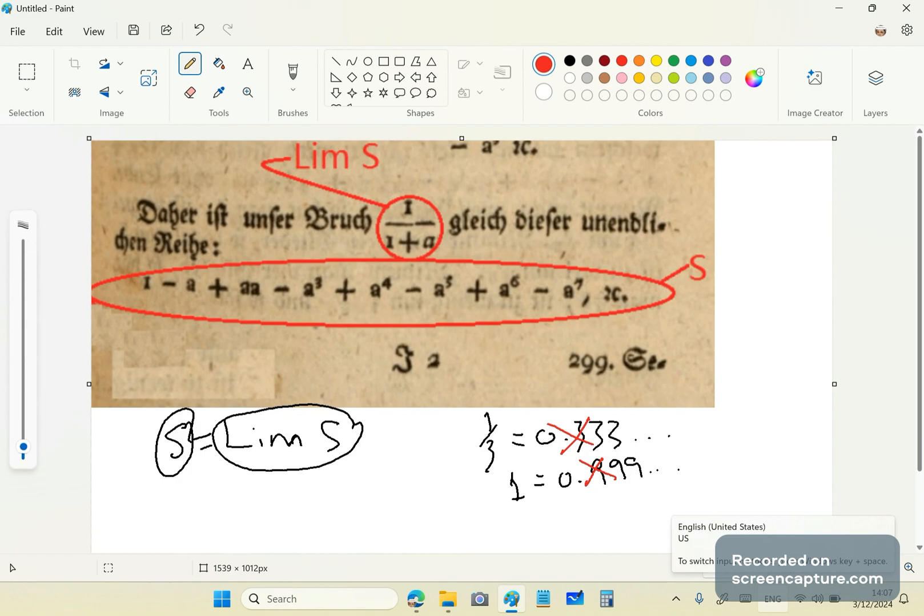So this theorem that I've just showed you proves that you cannot represent a third in base 10. So it would make no sense to say s is equal to lim s in this case, because it's not true. So a third does not have a measure in base 10, because 3 is not a prime factor. It's not one of the two prime factors of base 10, which are 2 and 5.